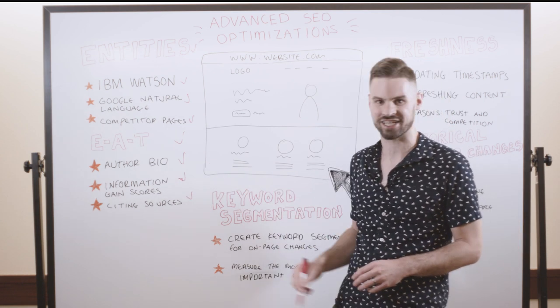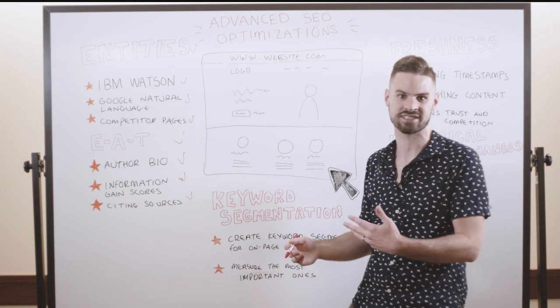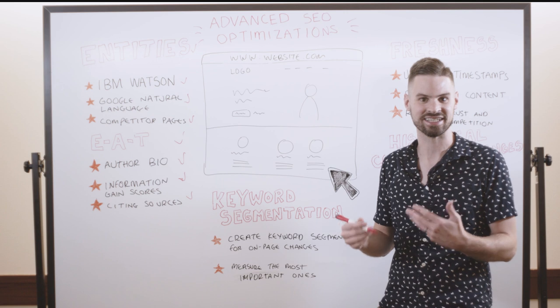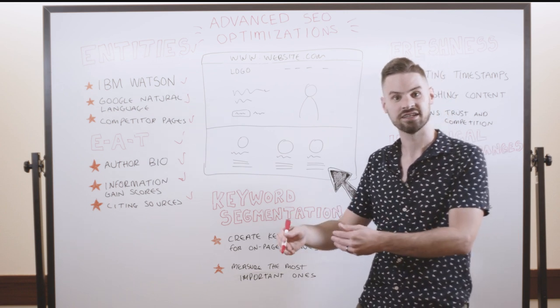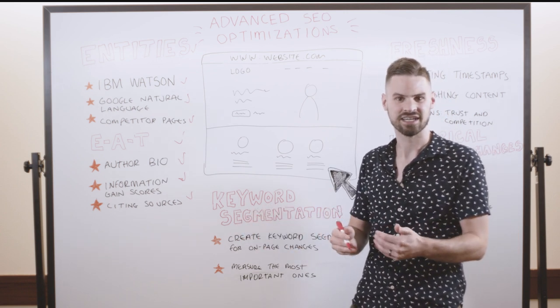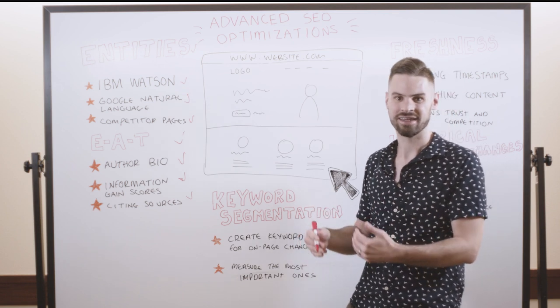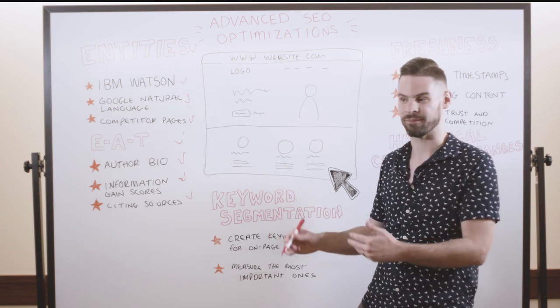Another great way to improve the EAT of your site's content is to actually cite sources. The Wirecutter is phenomenal at doing this. Anytime they cite an individual fact, they actually cite where they got that fact and link to external trusted accredited sources to verify where they're finding that information from.